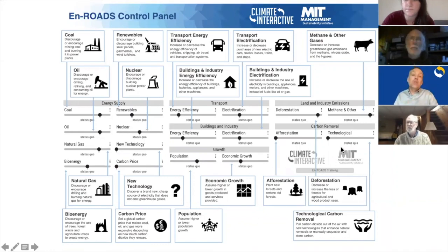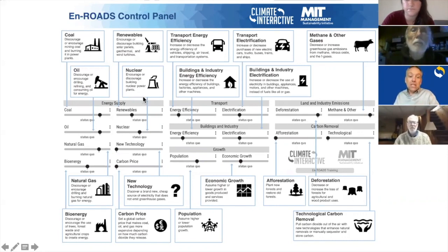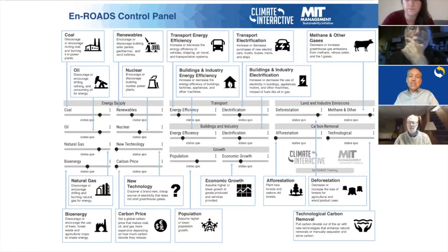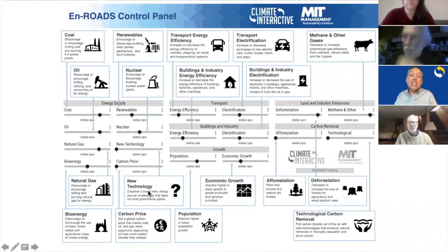The basic idea is this shows all the levers that you can change — all the things that we can do to address climate change. They're summarized here in this document: you can address coal, encourage it or discourage it, same with oil and gas, renewable energy, nuclear, and also carbon price, which is going to put a tax functionally on coal, oil, and gas — more on coal because there's more carbon in coal than in natural gas.